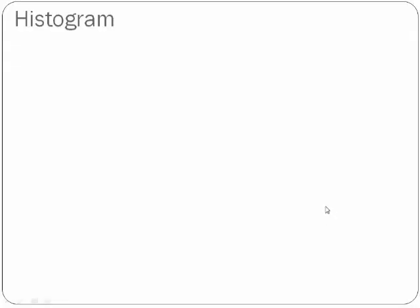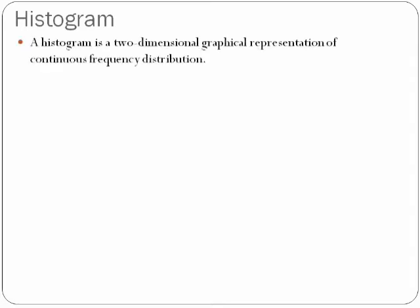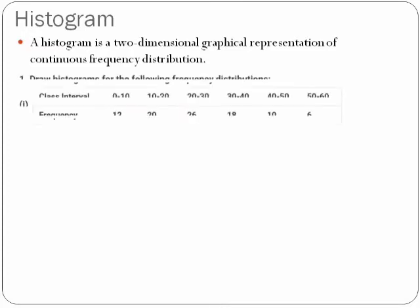First is histogram. As I told you, you have already learned about histogram, so let's have a quick revision. A histogram is a two-dimensional graphical representation of continuous frequency distribution. You have already learned about continuous frequency distribution in your class 9 statistics as well.